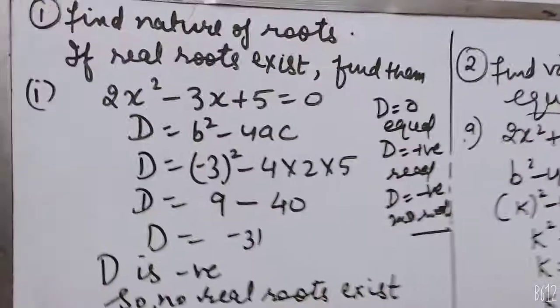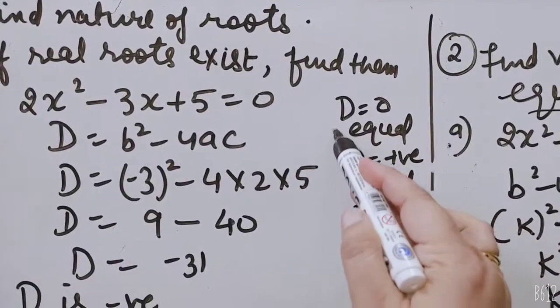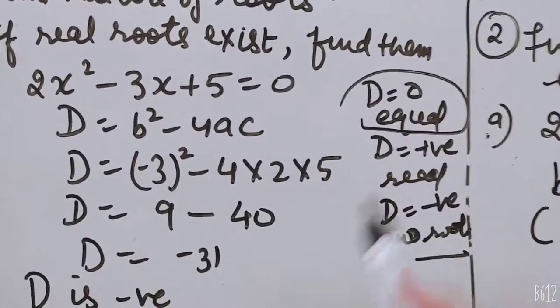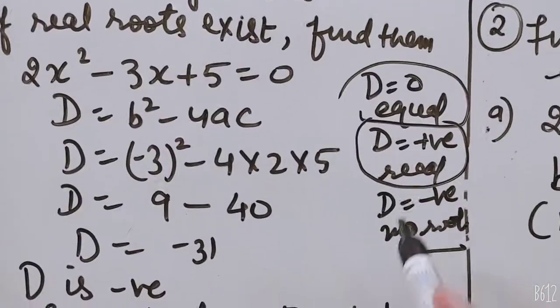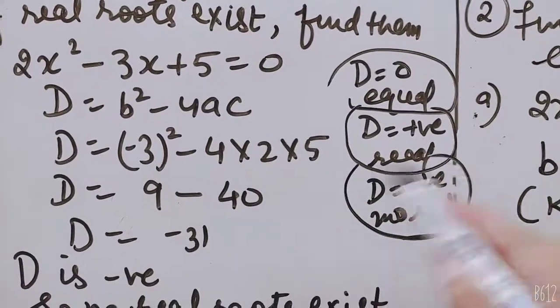I have told you in the last video, if D value is 0, then roots are equal. If D value is positive, then roots are real. And if D value is negative, then no roots exist.